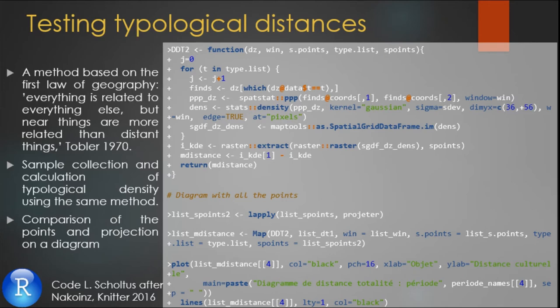From a technical point of view, this method works like the previous one with the creation of the samples and the calculation of the kernel density. Then, each point is compared to each other and the result is projected on a diagram.